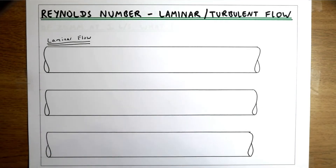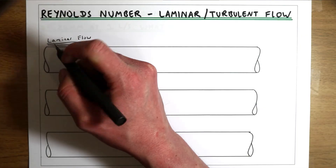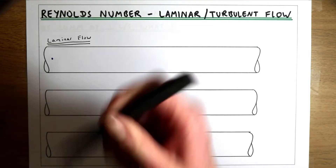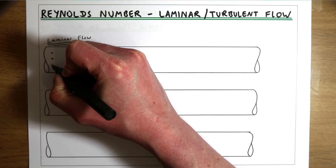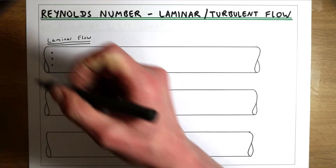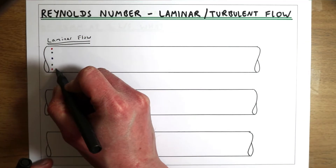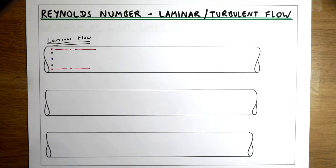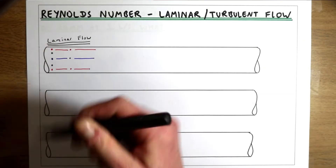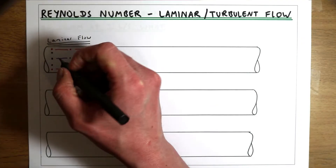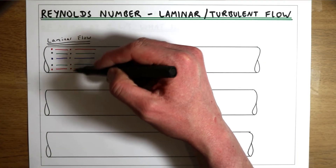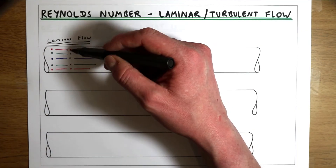Laminar flow occurs when we have very slow moving fluid. What characterises laminar flow are two main things. First, particles or water molecules in that flow will always travel in straight lines. If we imagine a series of water molecules across our flow, these particles will always stay along a straight line and flow smoothly. So we get little or no movement across the pipe — all of our velocity component is in the primary direction, and there's no transfer of mass between different layers of flow.